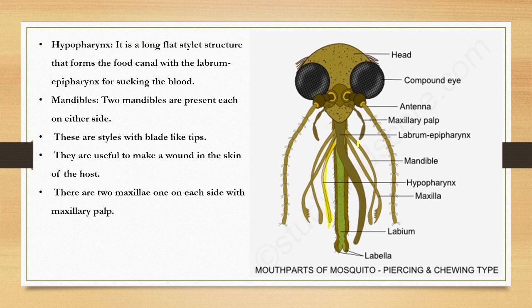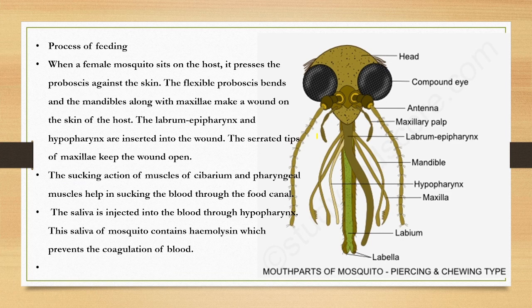The mandibles are stylet-like with blade-like tips, and are used to make the wound in the skin of the host. There are two maxillae on each side with a maxillary palp.